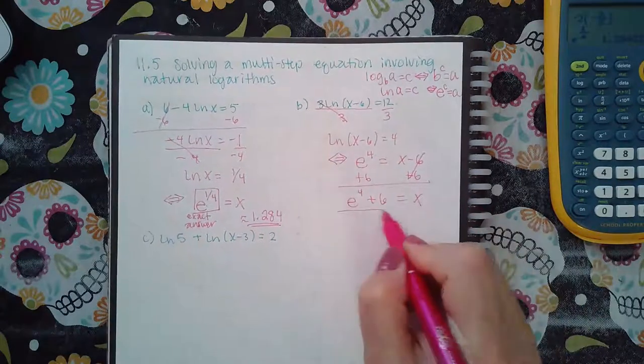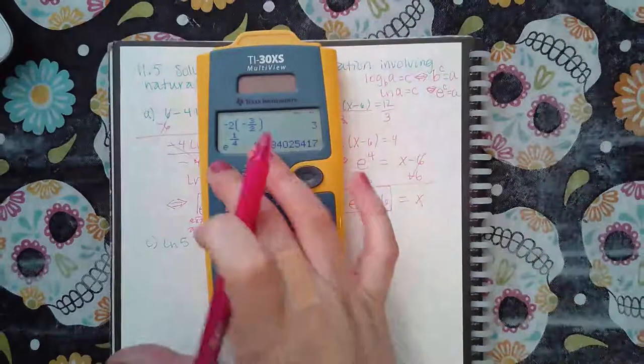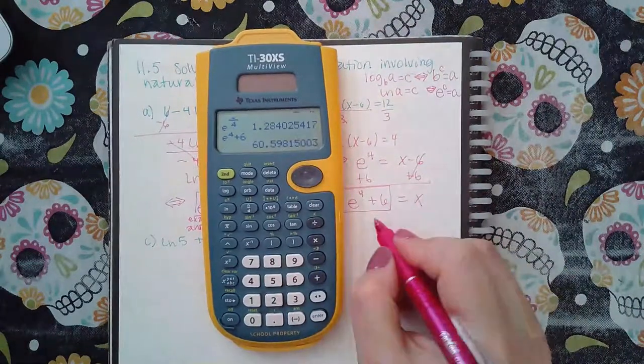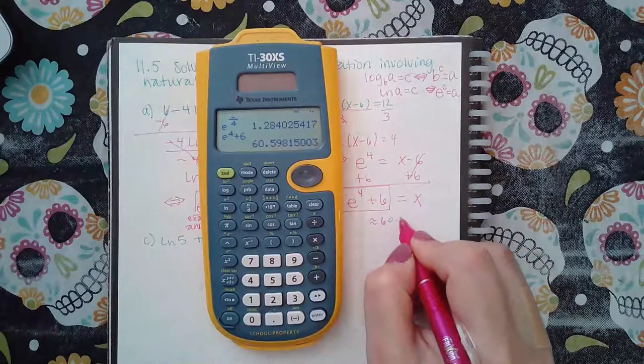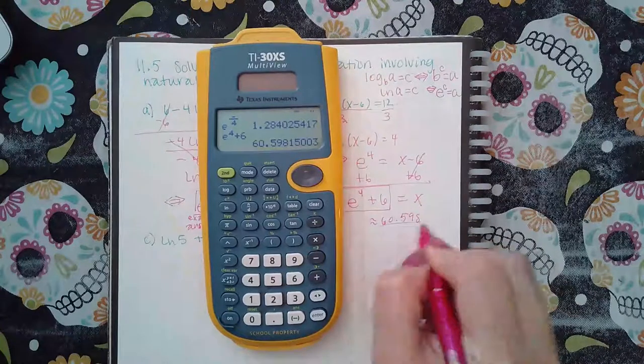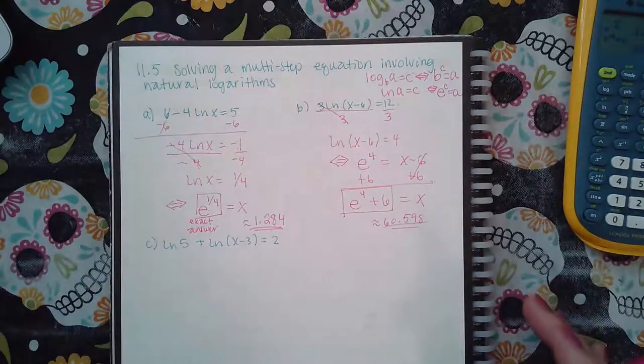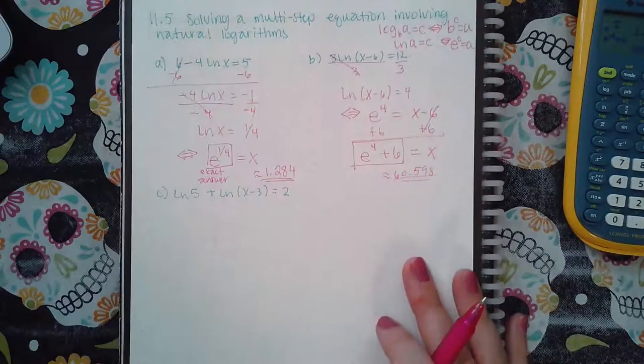Again this is the exact answer, but if they ask you for the decimal it would be 60.598. So pay attention to whether they say round to this or whether they say type an exact answer, those kinds of things.